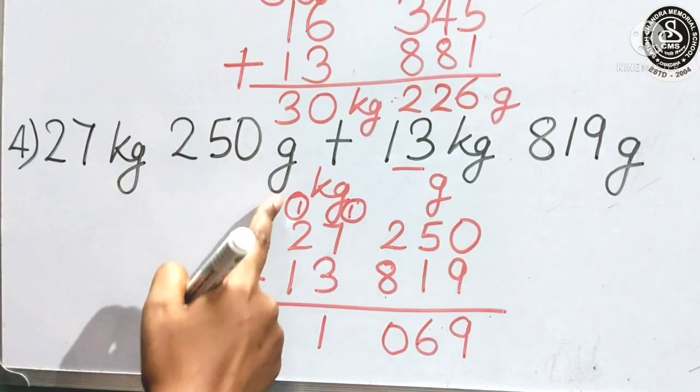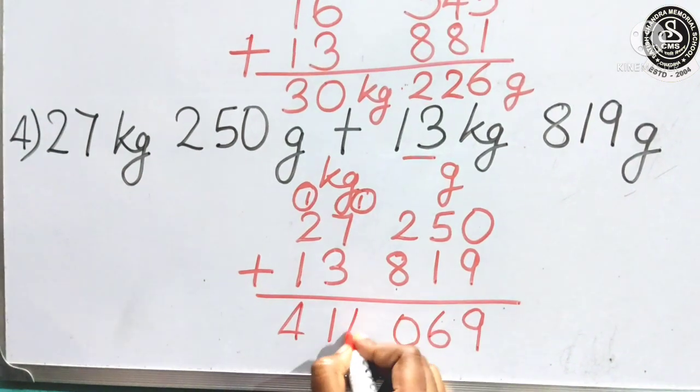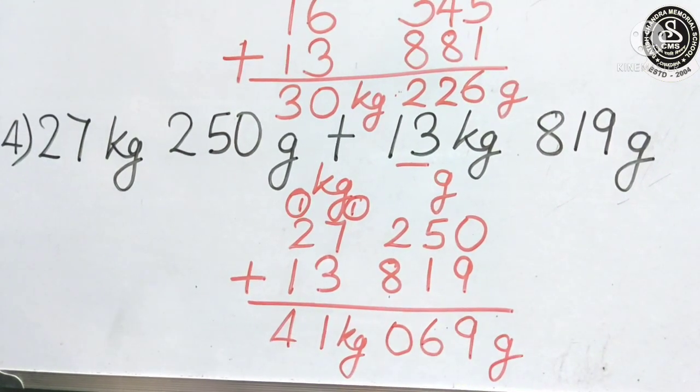Then 2 plus 1. 3. And we will add 1. Get 41. So, here. So, here. 41 kilogram. And 69 gram.